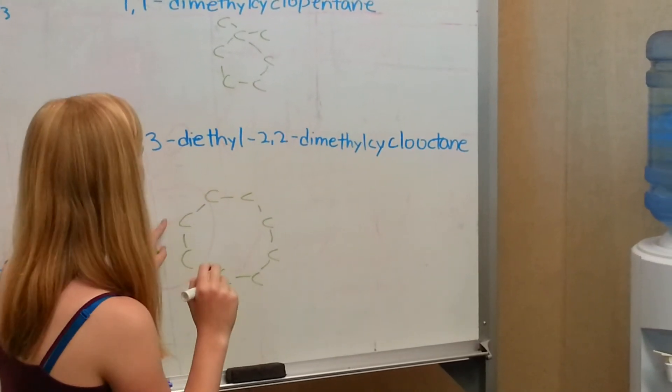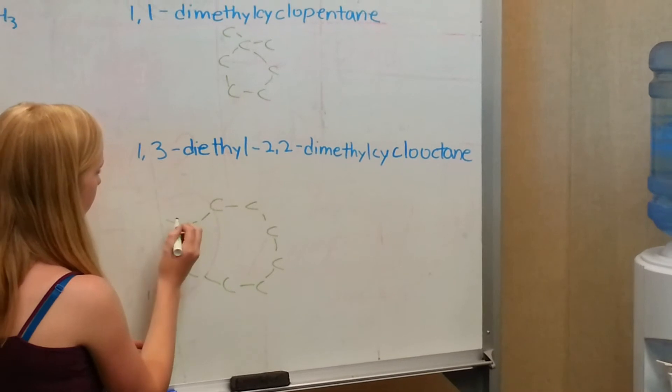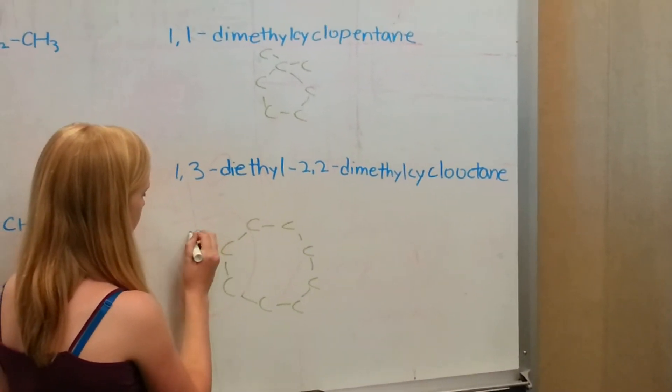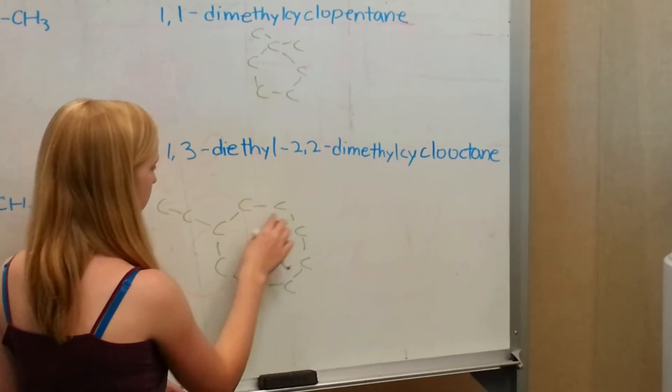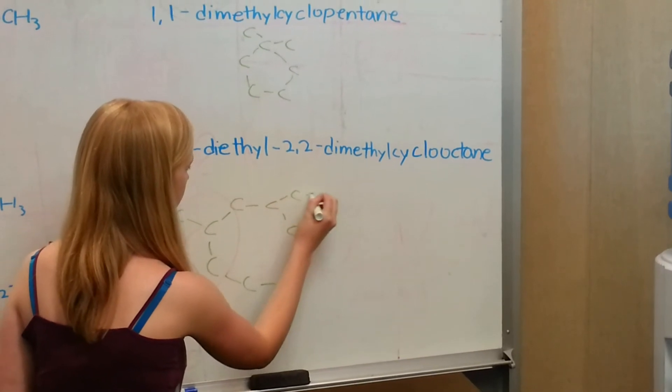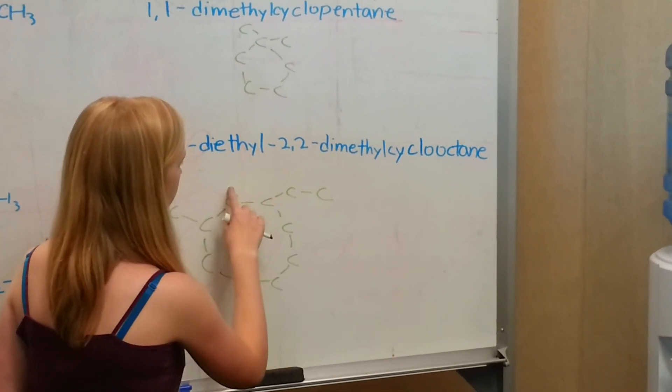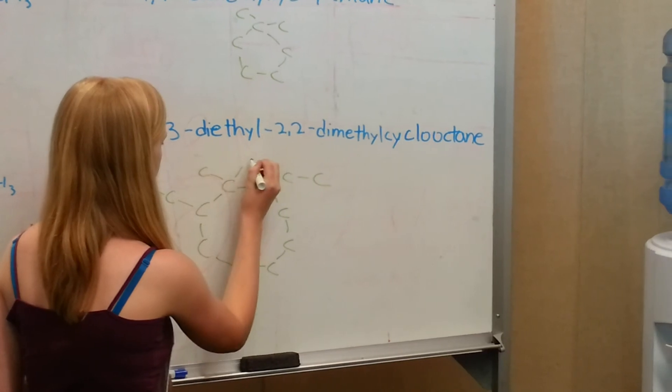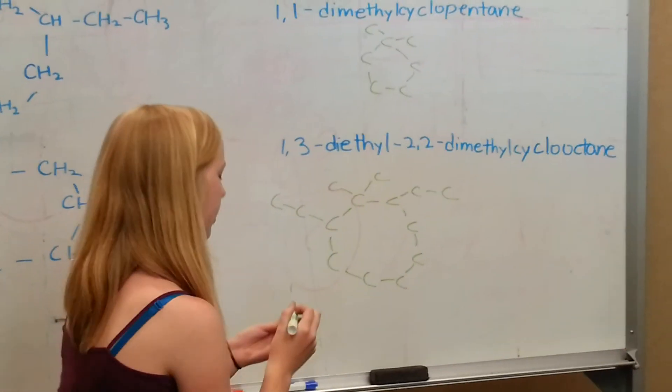And then we'll start 1 here and go clockwise. So there's 2 ethyls. 1, 2, 3. Here's the other one. Then on 2 there are 2 methyls. And there you go.